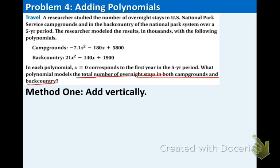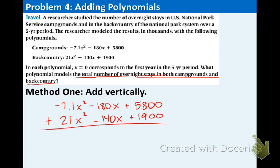Now, I personally prefer adding vertically and I think you would as well. So, let's rewrite the polynomials. And now we're just going to add down. Nicely, they're lined up already. So, let's do the negative 7.1 plus 21 that is 13.9x squared.